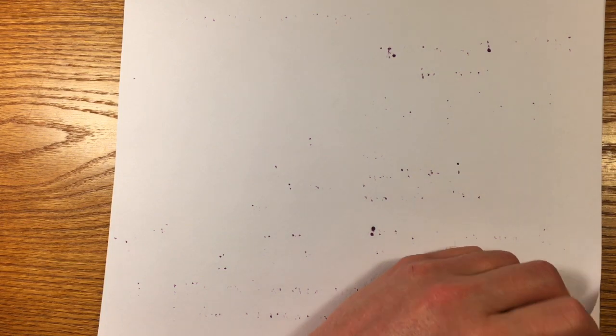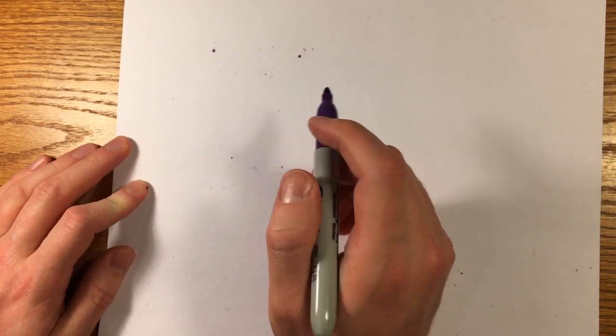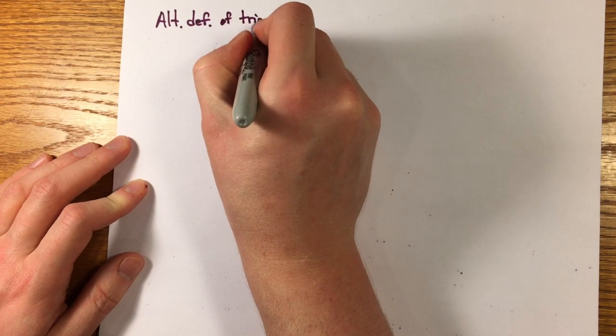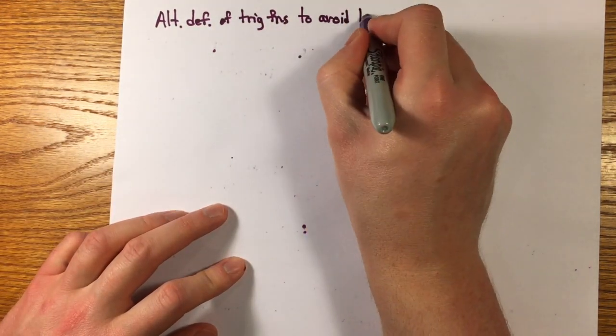To get around proving the length comparisons following in the path of Archimedes, some authors start from alternate definitions of the trig functions. With a different definition, you can make calculating the derivative easier, but other properties are harder to establish, and by the way, no one would ever have come up with these definitions to start with.